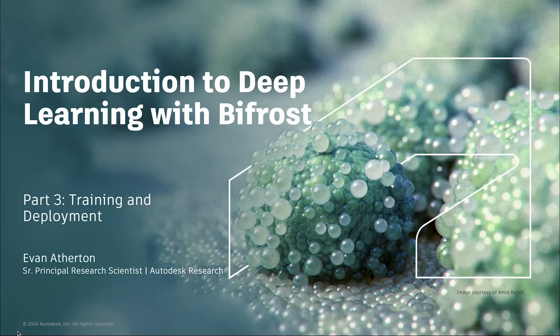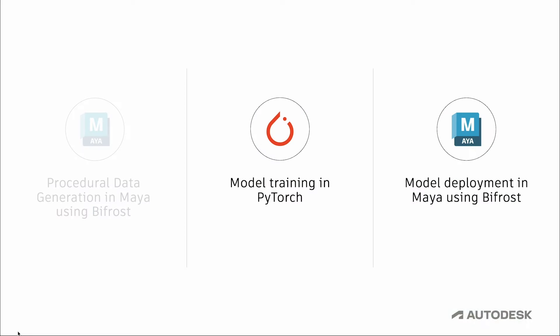Welcome to part three of the Introduction to Deep Learning with Bifrost tutorial series. In this part, we're going to use the data we generated in the previous tutorial to train our neural network with PyTorch, and then run our trained model back in Maya on our Bifrost rig.